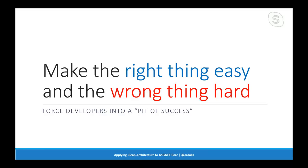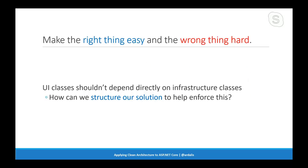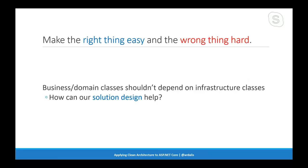One of the goals of clean architecture and the eShop on Web reference architecture is to make the right thing easy and the wrong thing hard — to force developers to fall into doing the right thing without thinking about it. We construct the solution so that dependencies flow the way they're supposed to, and if you try to go the wrong way, Visual Studio or the .NET Core build system will stop you. Our UI classes shouldn't depend directly on infrastructure classes — that makes them more tightly coupled, harder to test, and harder to swap in different implementations. For example, if instead of Cosmos DB we wanted to swap in a different data store, we'd have a hard time if the web project were working directly with Cosmos DB APIs.